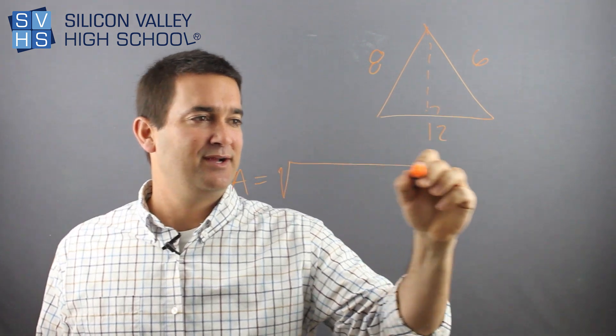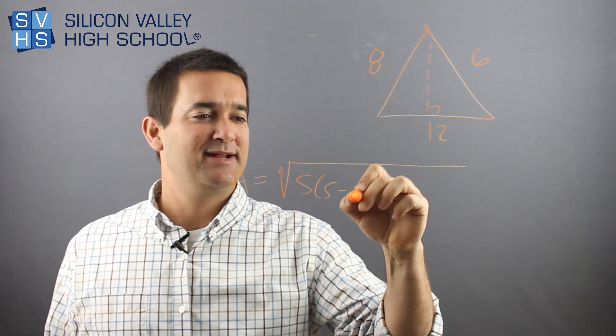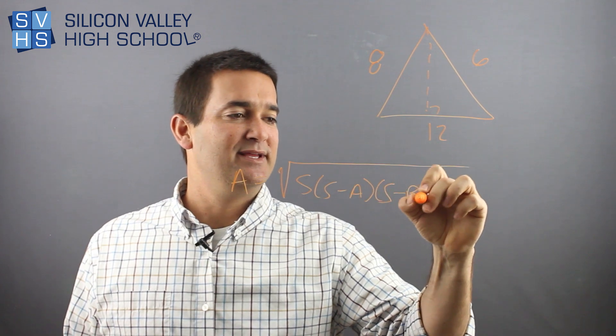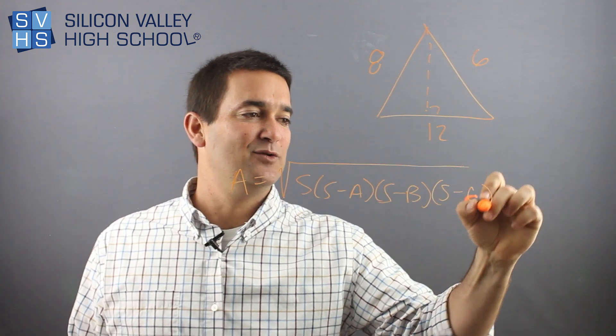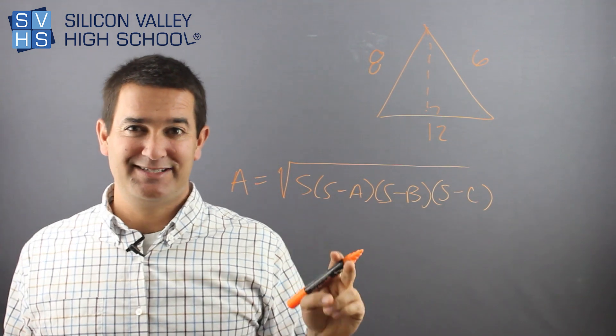The area of this triangle or any triangle is √[S(S-A)(S-B)(S-C)], which looks all crazy. And what is A, B, and C, and what is S?